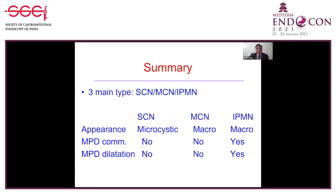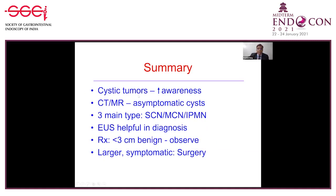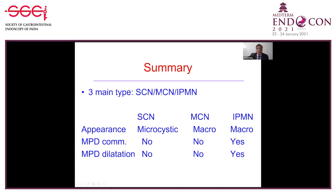In summary, there are three types of cystic neoplasm: serous cyst adenoma, mucinous cyst adenoma, and IPMN. How do you differentiate? Appearance: serous cyst adenoma is microcystic; mucinous and IPMN are macrocystic. Main pancreatic duct communication: no for SCN, no for MCN, only yes for IPMN. Main pancreatic duct dilatation: no for SCN, no for MCN, present in main duct IPMN. These simple characteristics seen on MRI and EUS help differentiate between these lesions.